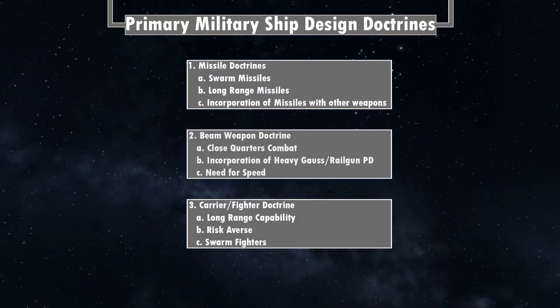First, let's look at the primary doctrines. Number one is missile doctrine — this encompasses anything to do with missiles as a primary focus. This includes swarm missile doctrine, getting as many launches as possible with very small missiles to overwhelm the enemy's point defense systems. This is also known as AMM spam. Missile doctrine also allows for extremely long range with two-stage missiles and incorporating AMMs with PD very effectively.